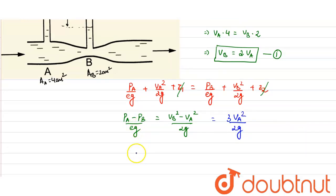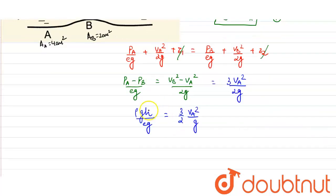Now, PA minus PB is the pressure difference in the vertical tube, so it will be ρgH divided by ρg, which equals 3VA²/(2g). Now, from here, ρ and ρ got cancelled out, g and g got cancelled out, so H comes out to be (3VA²)/(2g).